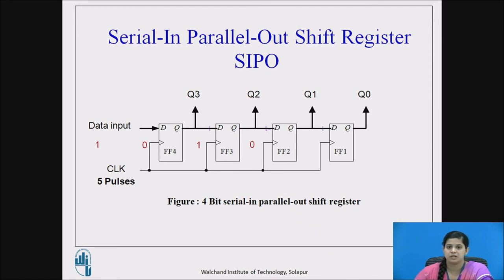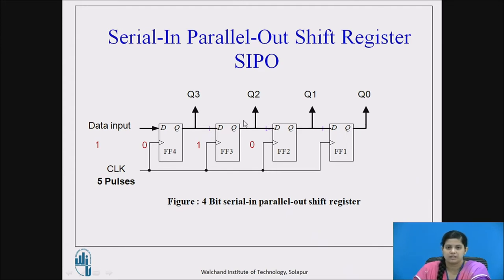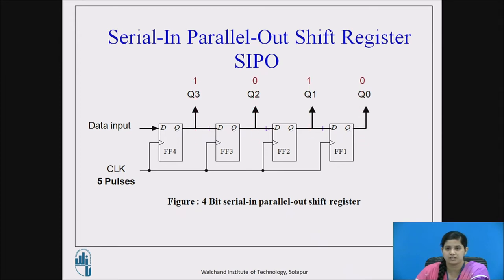The next type is serial in parallel out shift register, that is the SIPO register. The four D flip flops are again arranged in cascading manner — the output of the first flip flop is given to the input of the next flip flop, and the four flip flops' outputs are connected to the next flip flops' inputs. But the outputs are collected simultaneously. For example, if we consider 1010, the bits are shifted towards the right one by one within 4 pulses, and at the fifth pulse the data 1, 0, 1, 0 will appear at the output simultaneously. So totally 5 pulses are utilized to see the data at the output.